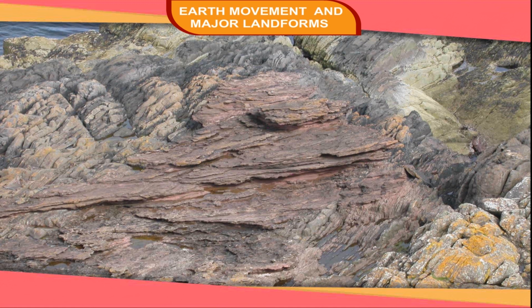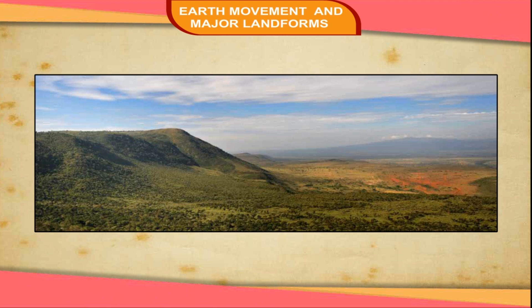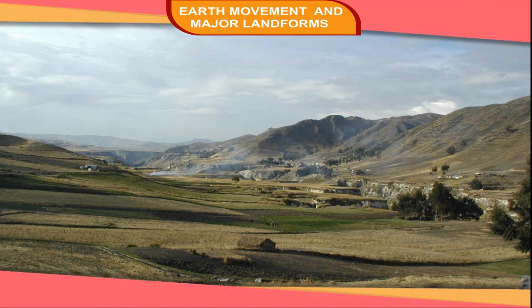Forces of Tension operate in opposite directions, causing a fault or fracture in the Earth's crust. The fractured rock strata either slides upwards or downwards along the fault line. Faulting gives birth to new relief features like the rift valley or a block mountain. If a block of land is uplifted between two parallel faults, it forms a huge mountain known as a Block Mountain. If a block of land subsides between two parallel faults, a trench is created, known as a Rift Valley.